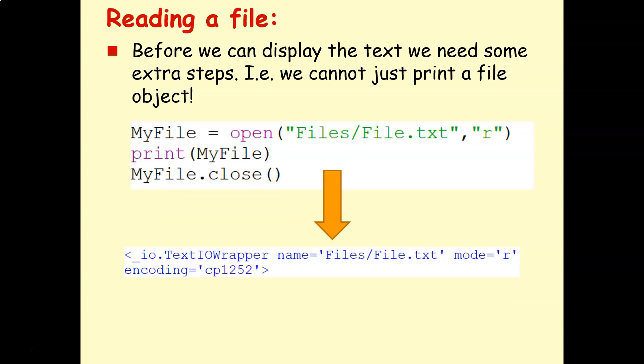Before we can display the text, there are some extra steps that we have to do. We can't just print out a file object. So if I say myfile equals open, files.txt, read mode, print myfile, myfile.close. Seems great, but this is what I'm going to get displayed in my editor window here. Because it's trying to print out a file object and it doesn't know how to do that, you've got to give it some more instructions before you can display the contents.